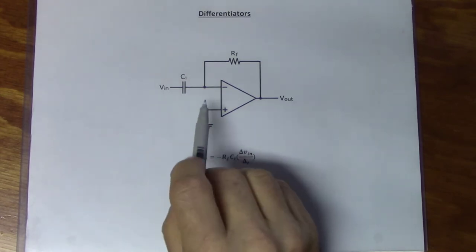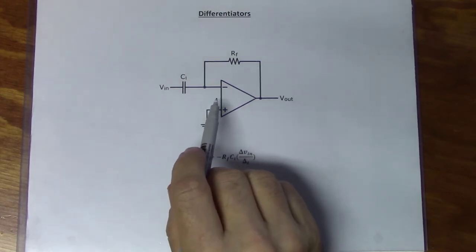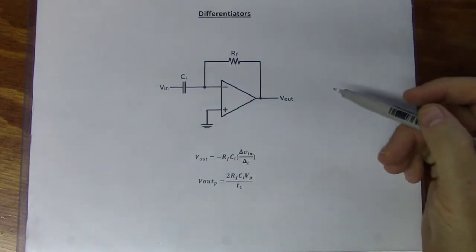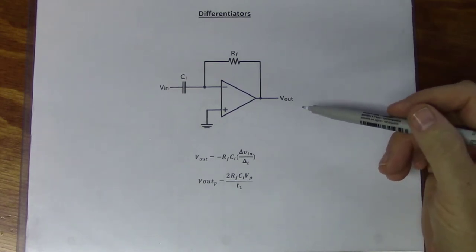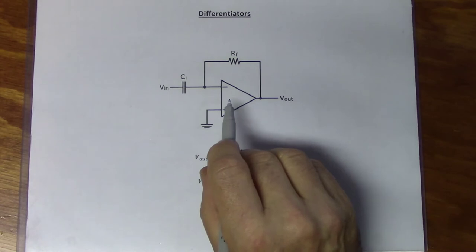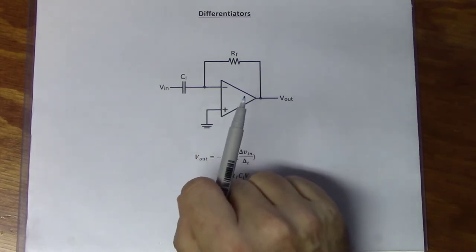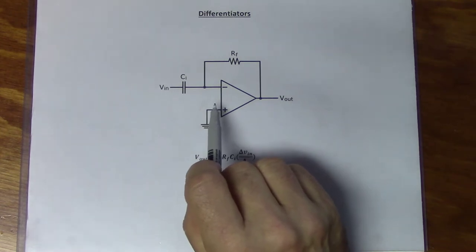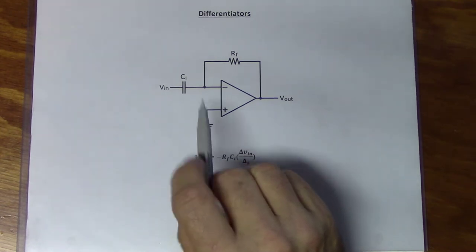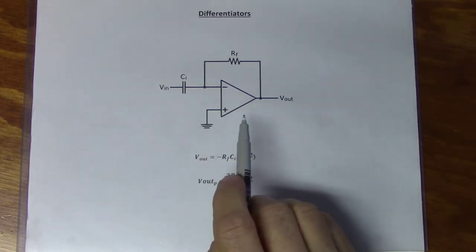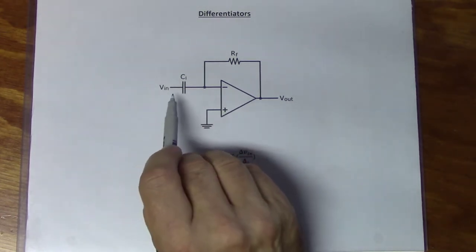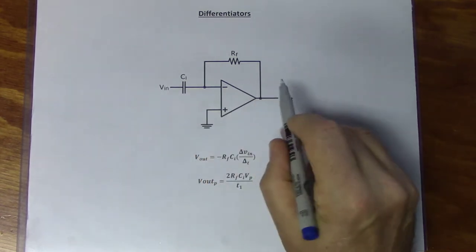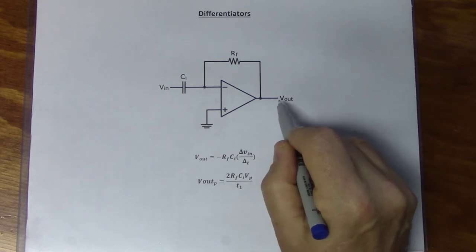If we look at what a differentiator does — there's an entire branch of calculus called differential calculus which covers this — we're not going to cover a full class on it. We'll cut down to the meat of the problem and look at it in a simpler fashion. What a differentiator does, as far as we're concerned, is it takes the rate of change of a voltage at the input and gives us a voltage at the output that's proportional to that rate of change.